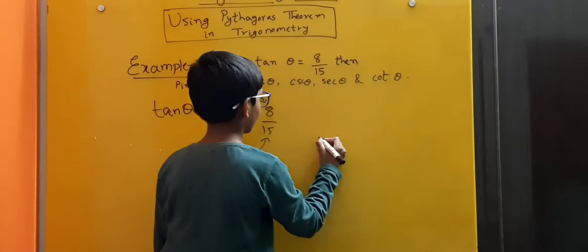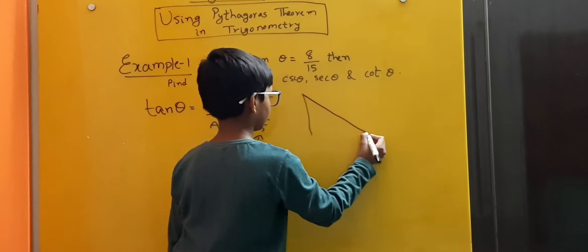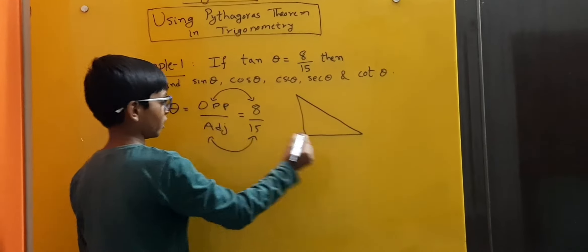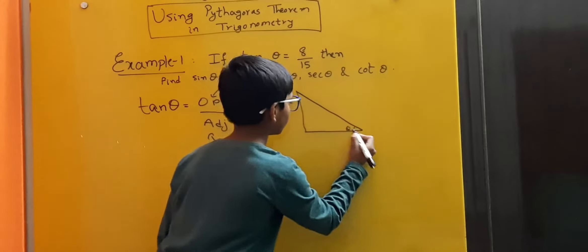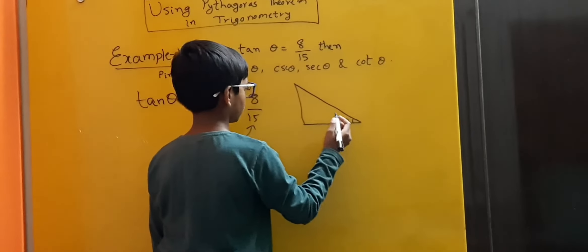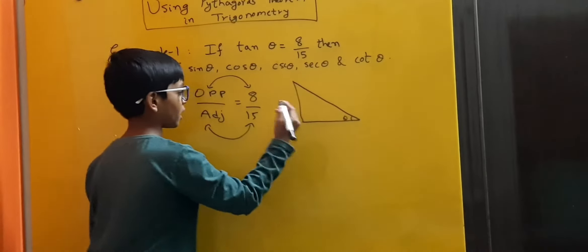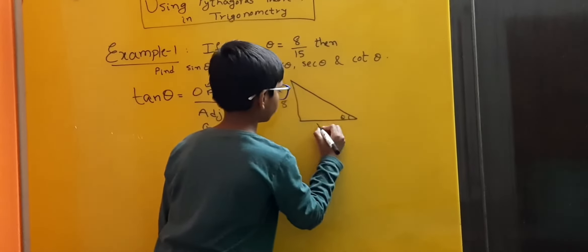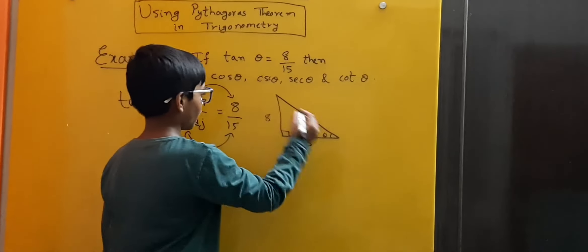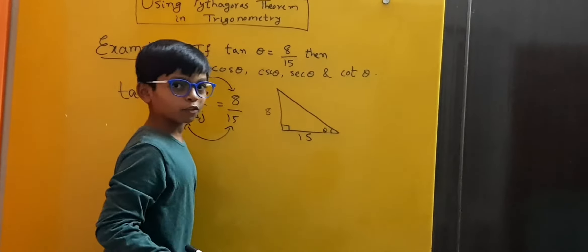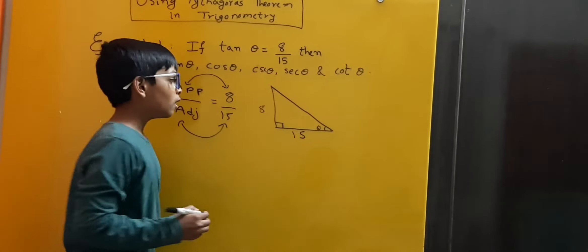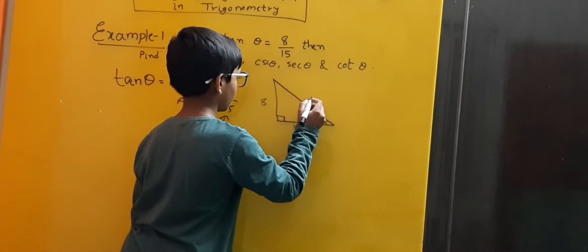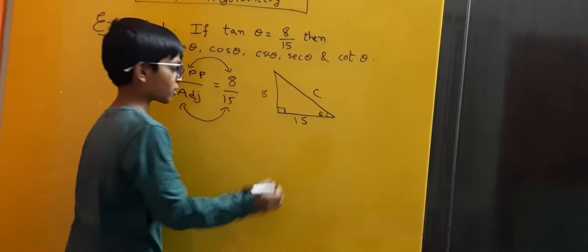Let us draw a right angle triangle. The opposite side to theta is 8, and the adjacent side is 15. The hypotenuse we have to find. We will use Pythagoras theorem to find the hypotenuse. We label the hypotenuse as C, and the legs as A and B.